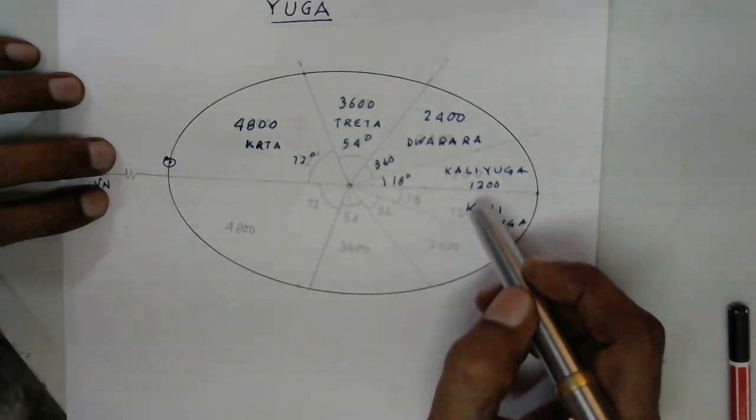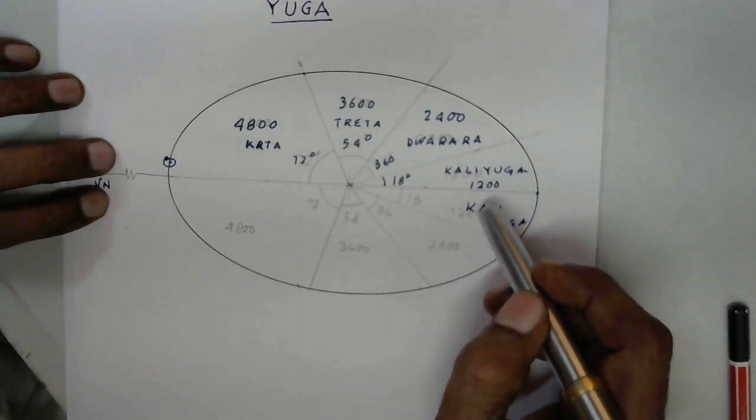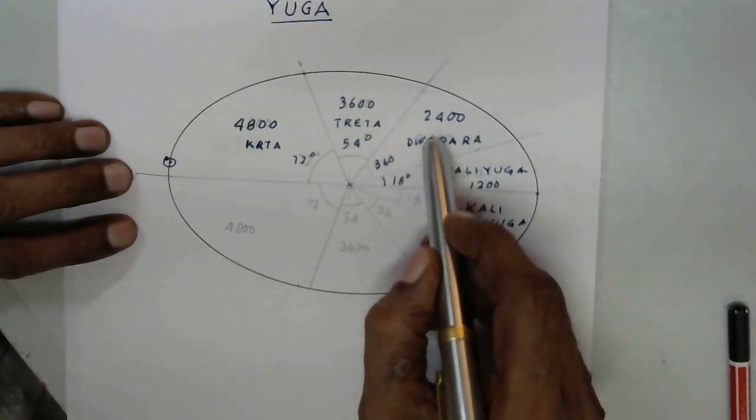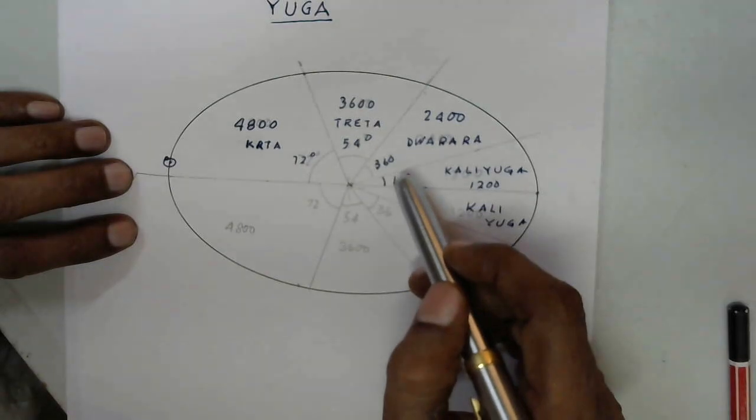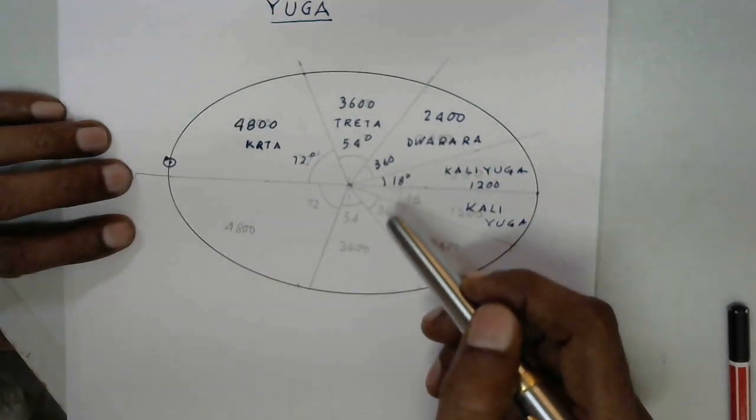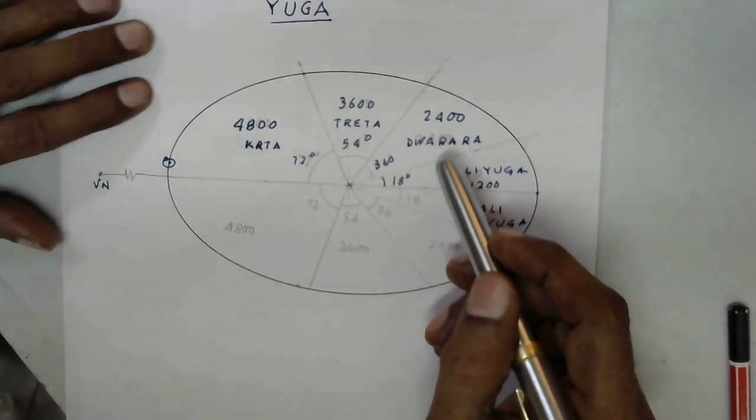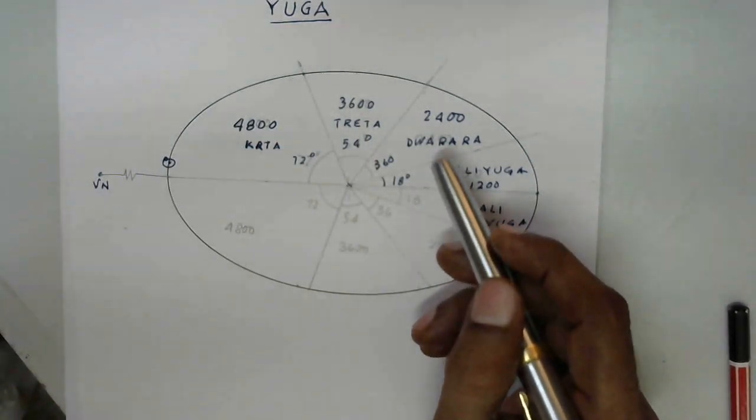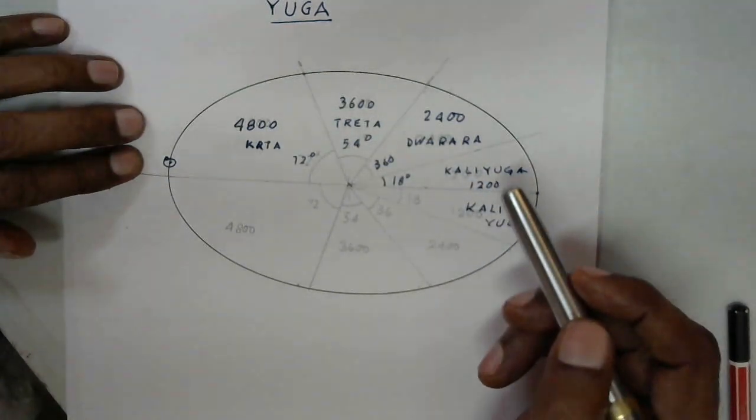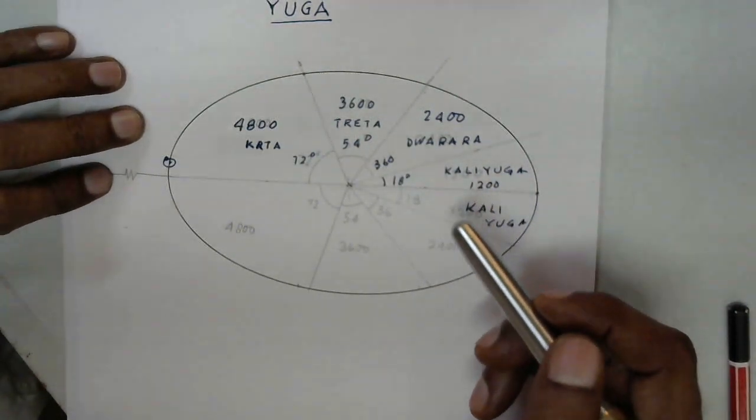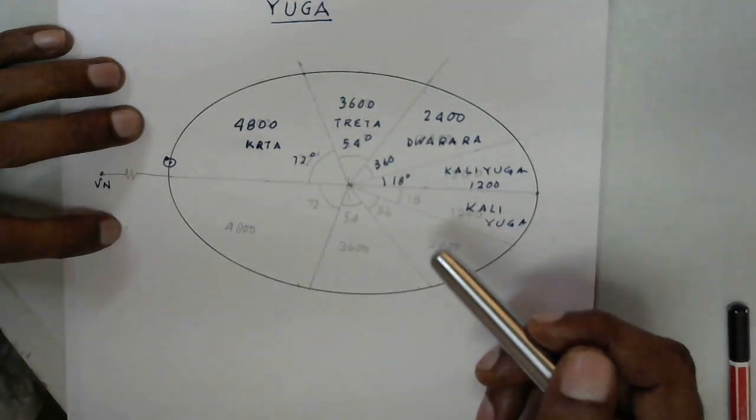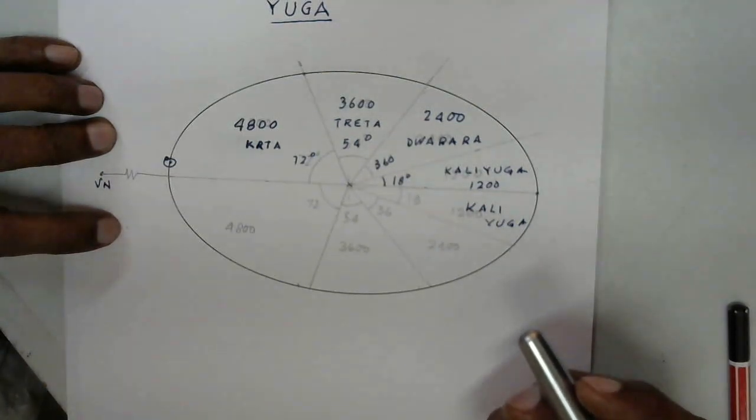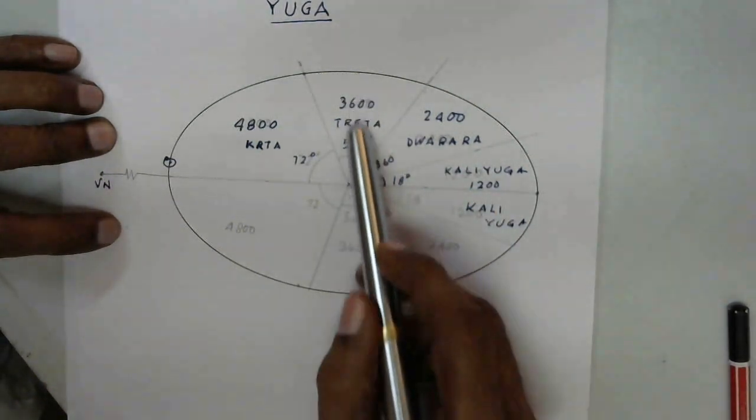If you take that as true, then what happens to this 2400 years? It will become 8 lakhs 64,000 years. That means Rama lived 8 lakhs 64,000 years back, which I believe is totally impossible. Modern archaeological studies including the Rama Sedu show it is not that old. It is maximum 5,000 to 6,000 years old, which will definitely come into this Treta Yuga period.